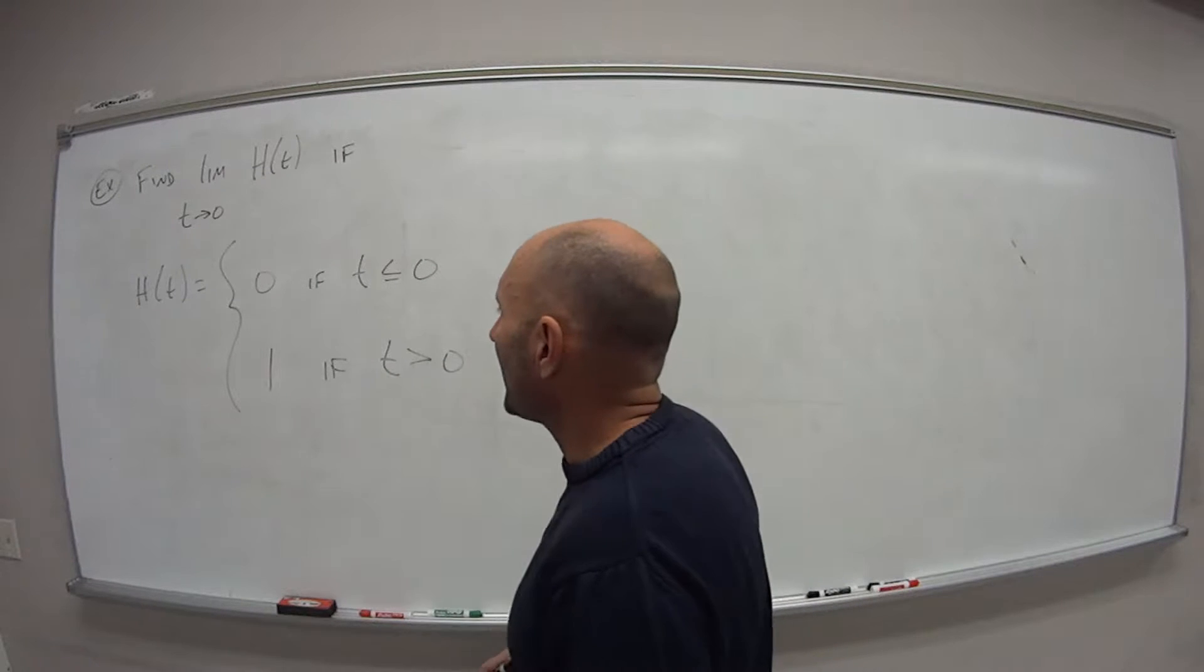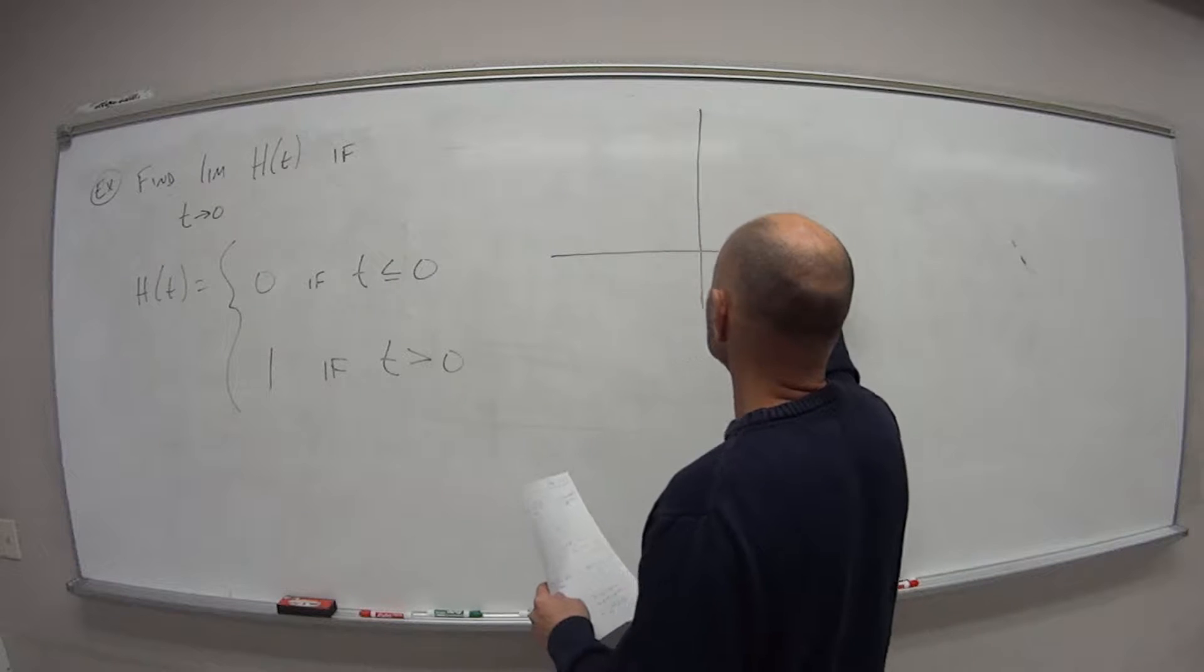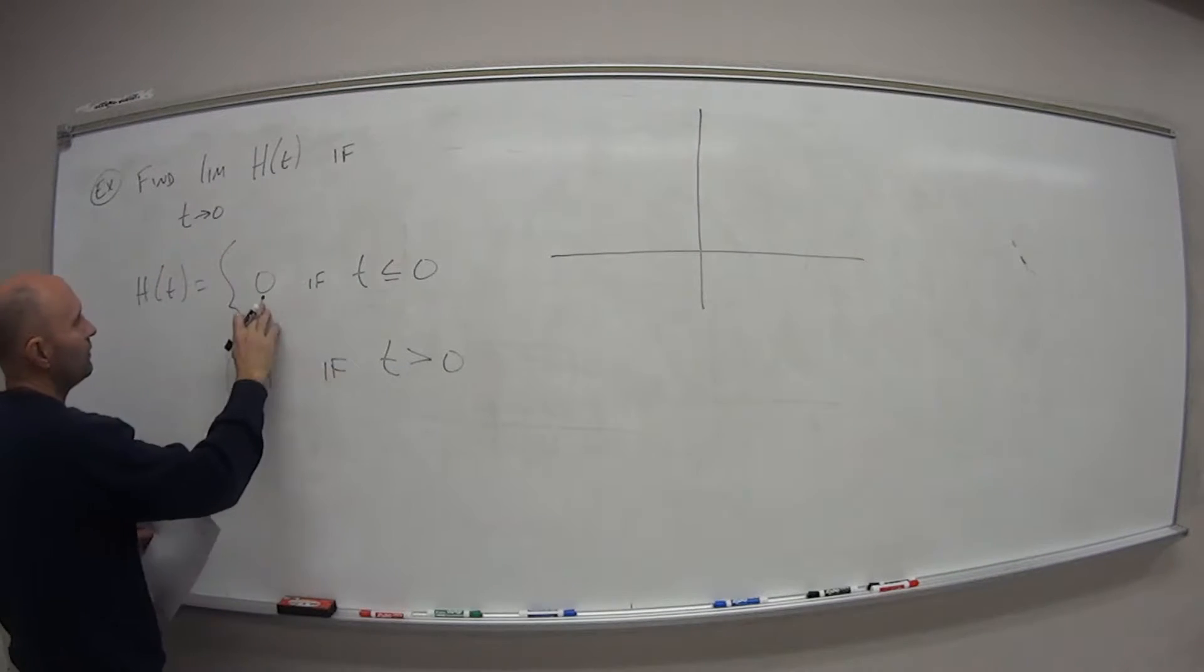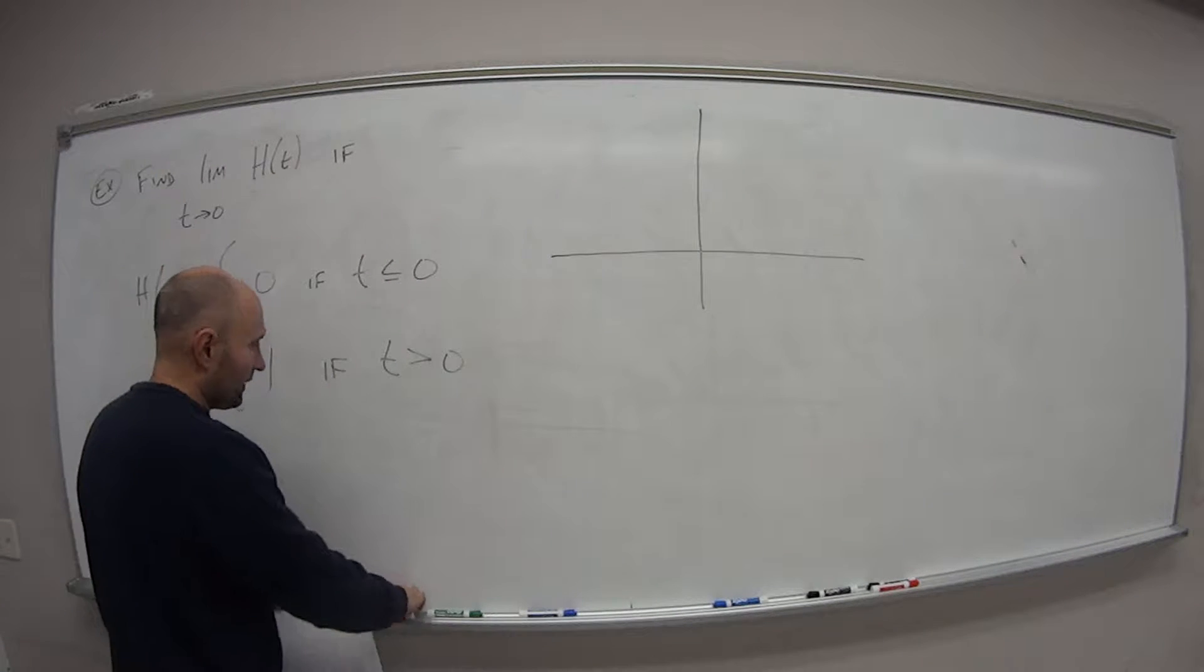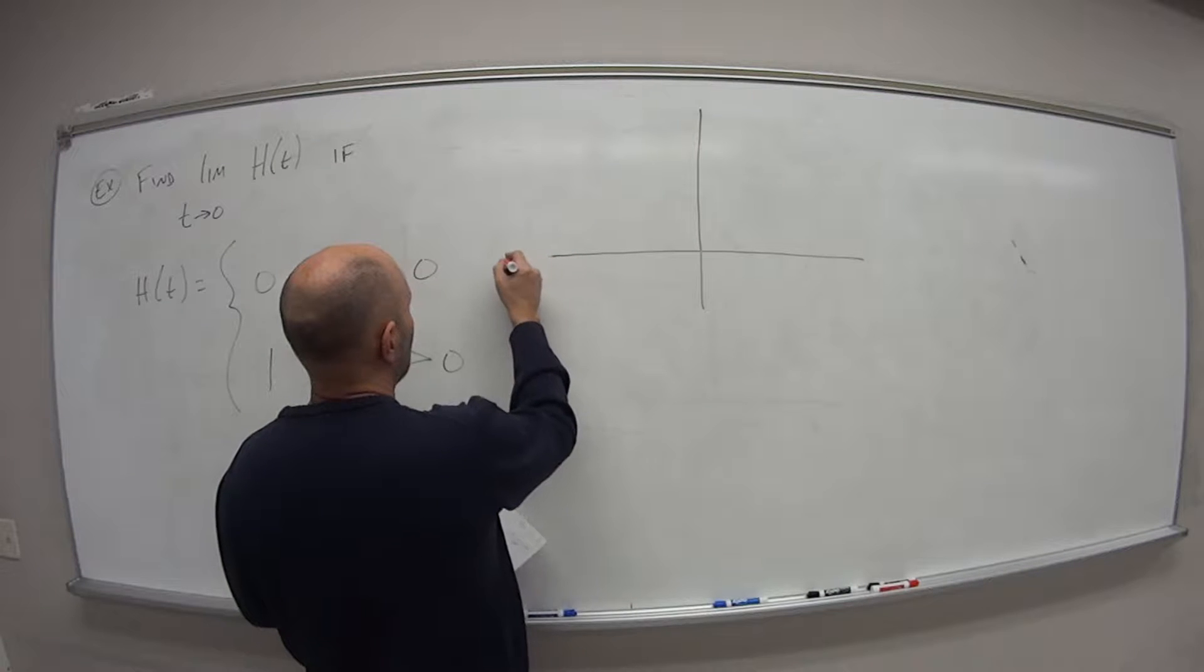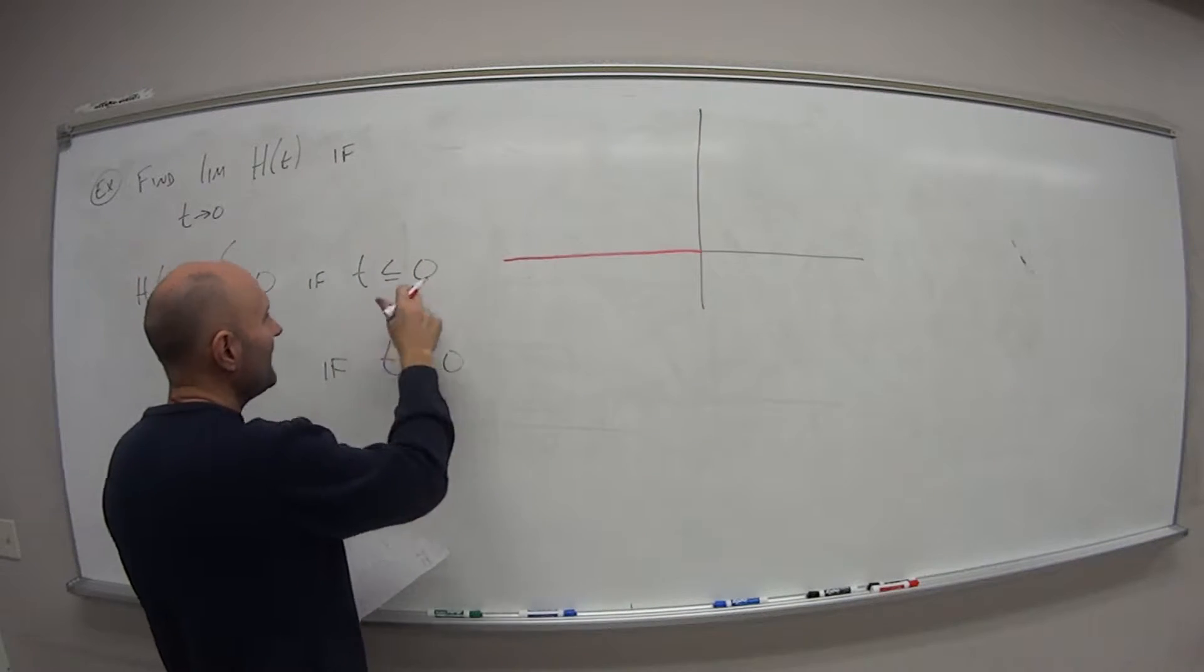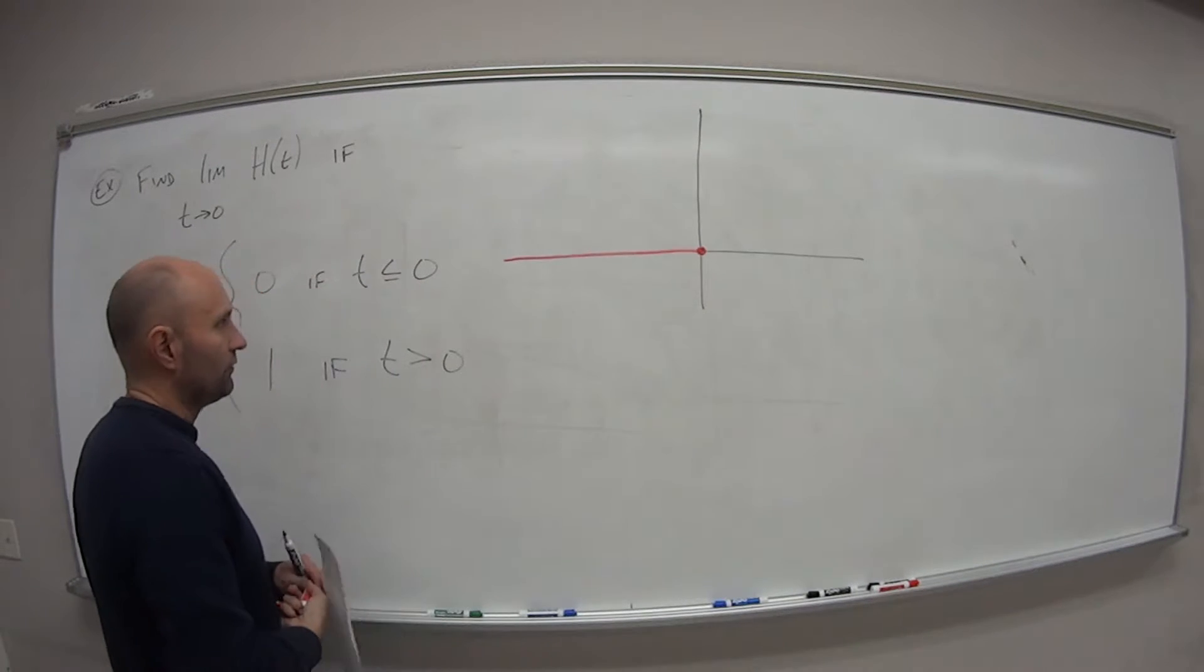So let's look at what does this thing look like from a graph perspective. My function value is equal to 0 if t is less than or equal to 0. So that means I'm down here on the x-axis up until 0 and including 0. So it gets the filled in circle there.